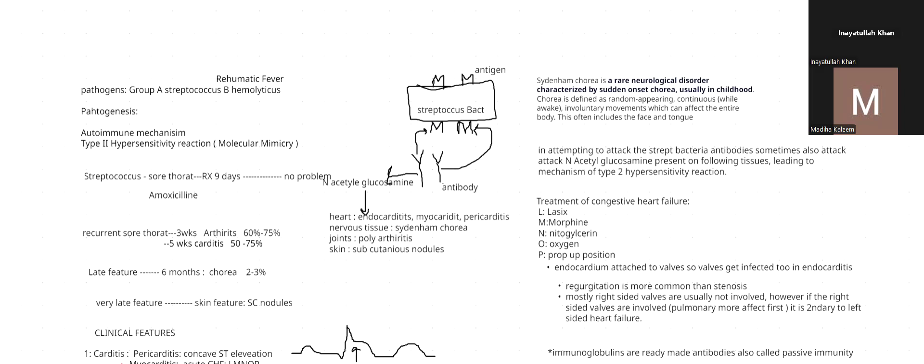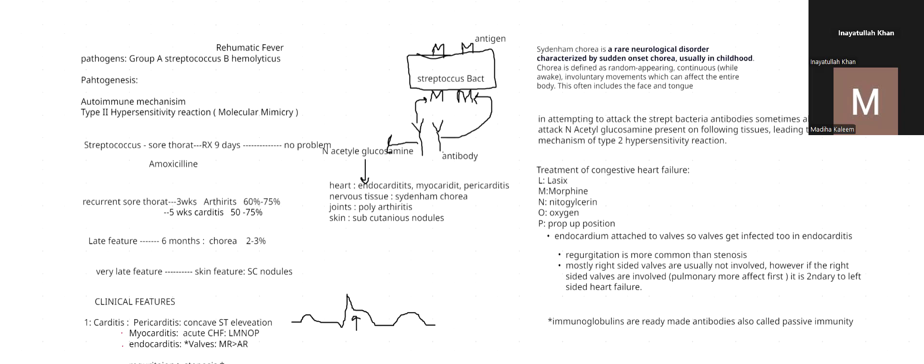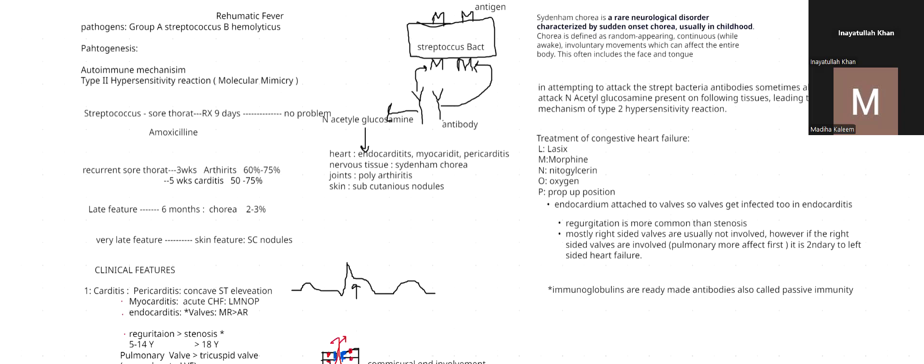When the Streptococcus bacteria enter our body, on the surface of the bacteria there is the M antigen. Our immune system recognizes this M antigen and produces antibodies against it. These antibodies react against the M antigen and form immune complexes, which are later destroyed by the immune system.